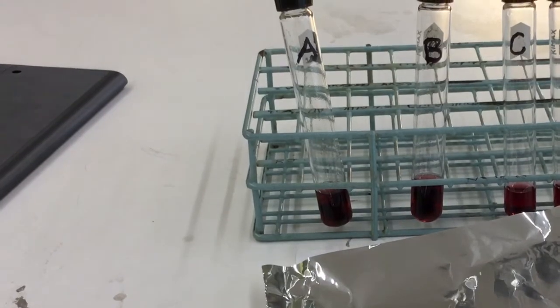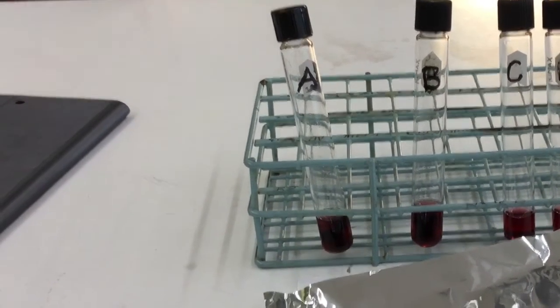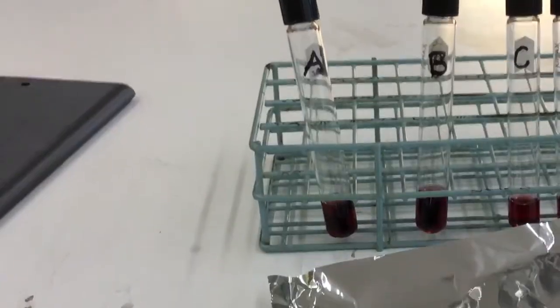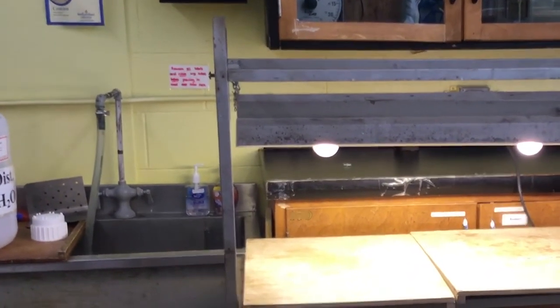When all the tubes are ready, I'll then put them in a light bank, like this one here, making sure the tubes are all at an angle so that they have the most exposure to light as possible, most surface area exposed to light.